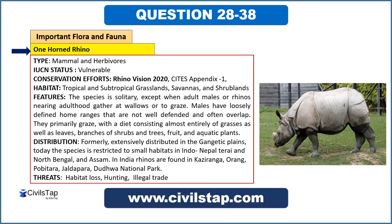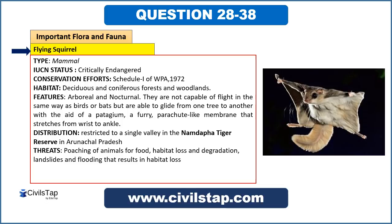The flying squirrel — also known as Namdafa flying squirrel — is a mammal, critically endangered species. Though it cannot actually fly, it takes high jumps and can glide from tree to tree. It is an arboreal and nocturnal animal, so it can only be seen at night. Its habitat is very restricted — it is found only in Arunachal Pradesh, specifically in the Namdafa Tiger Reserve. This is why it is called the Namdafa flying squirrel.